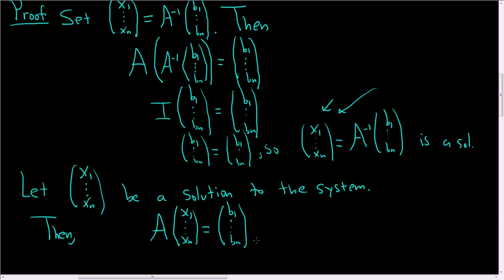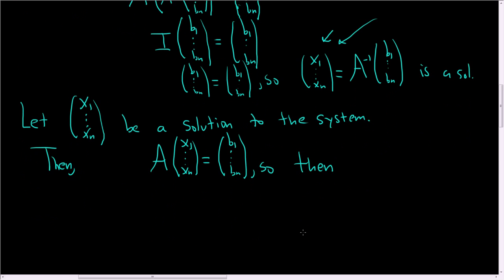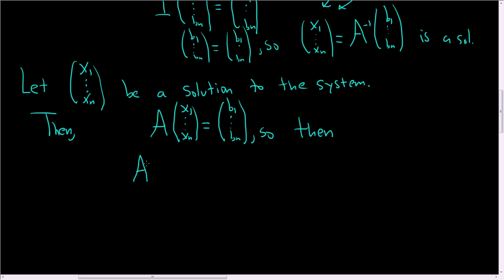And A is invertible. So what we can do is multiply this on the left by A inverse. So then, multiplying on the left by A inverse, we have A inverse times A, and then we have the little x's here. And then we also have A inverse over here.